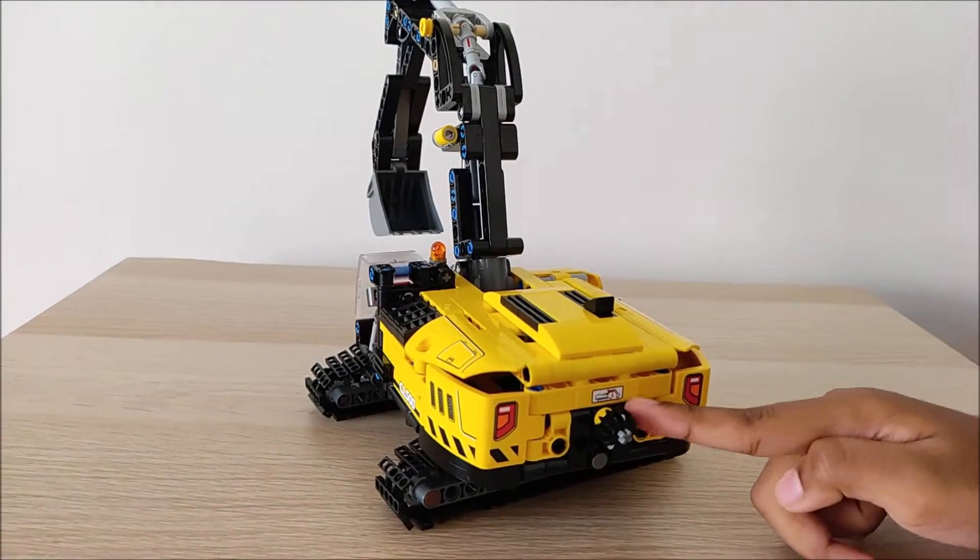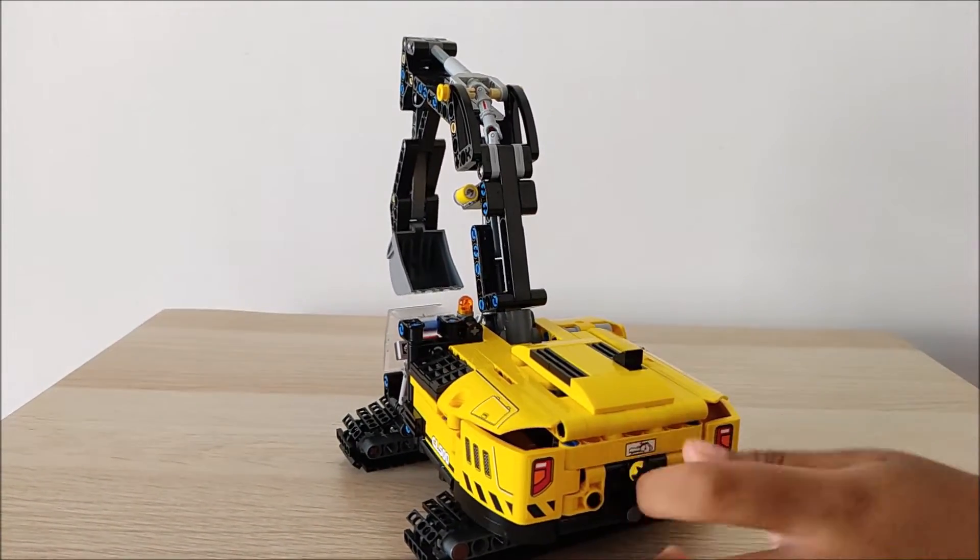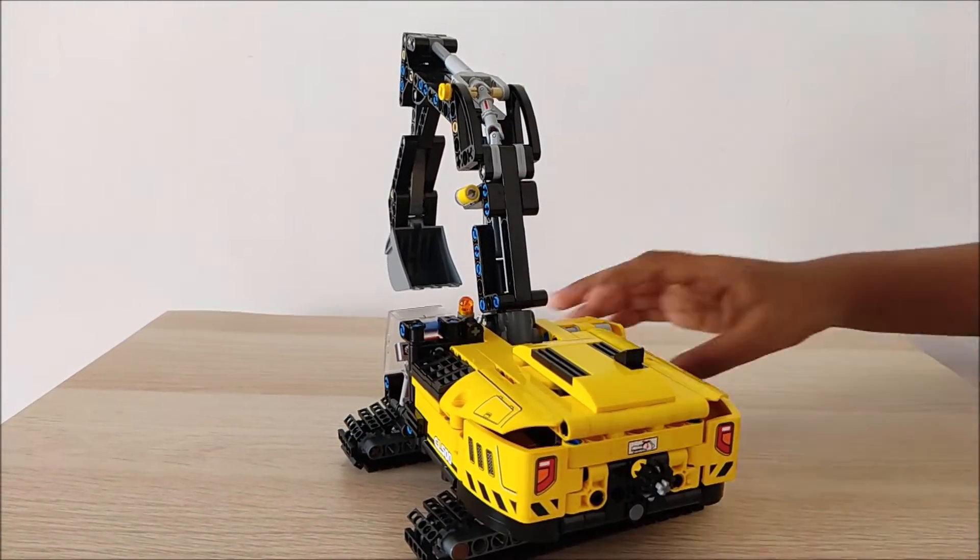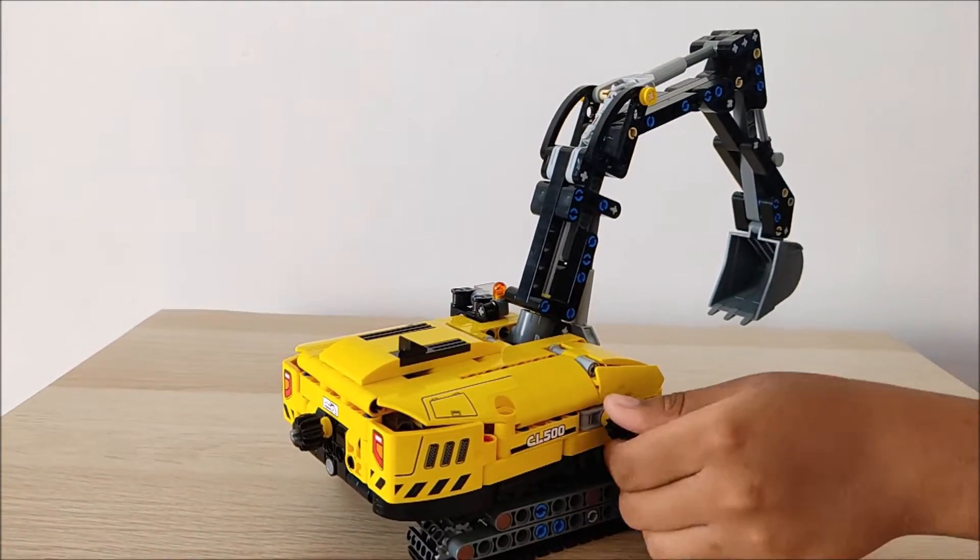This knob, as you see, is used to control the up and down movement of the arm. And this knob is used to control the bucket.